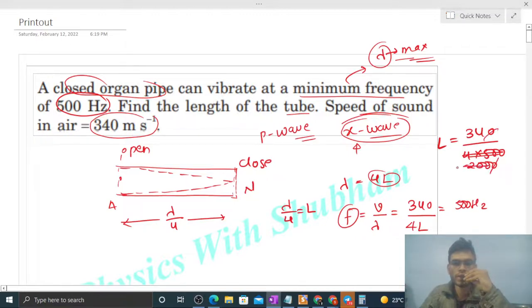So one zero cancels with one zero, and this can be divided by 2, so it becomes 100 below and 17 above. So 0.17 meter, or you can say 17 centimeter.